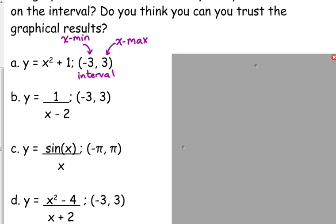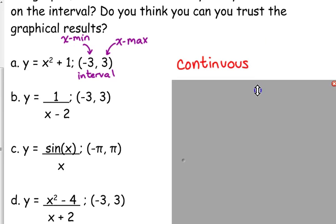x squared plus one, continuous, not continuous? Continuous, okay, it is continuous. It is a polynomial. If you do not remember from pre-calculus, all polynomials are continuous everywhere. Their domain is all real numbers. There are no issues, no holes, no vertical asymptotes, nothing like that. They are continuous.